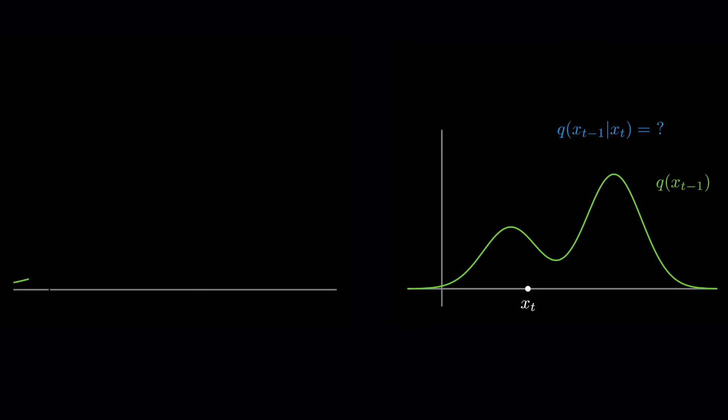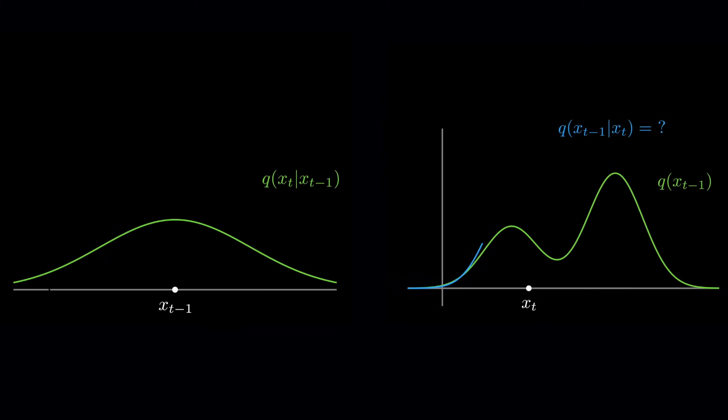If the noise step, that is, q of xt, given xt-1, is allowed to be large, then we will be quite uncertain about the location of xt-1. Who knows where we jumped from?